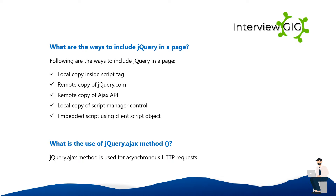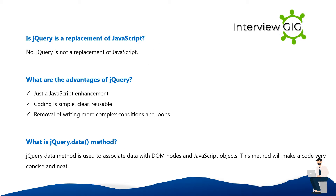What is the use of the jQuery.ajax() method? The jQuery.ajax() method is used for asynchronous HTTP requests. Is jQuery a replacement for JavaScript? No, jQuery is not a replacement for JavaScript. What are the advantages of jQuery? It is just a JavaScript enhancement — coding is simple, clear, and reusable.